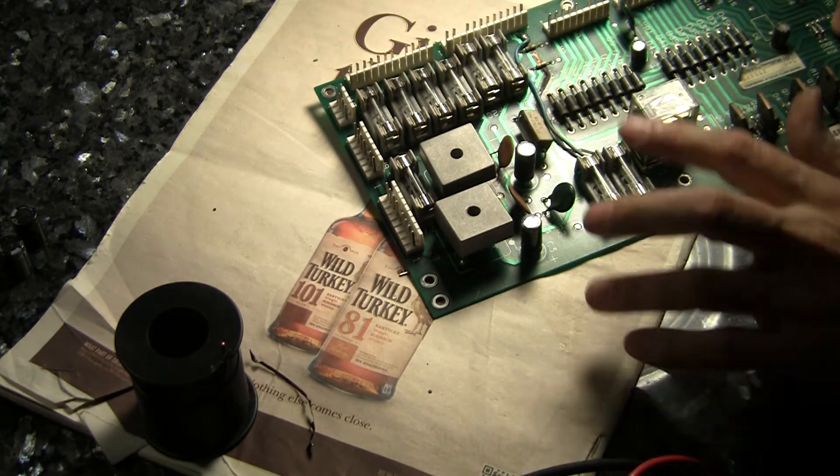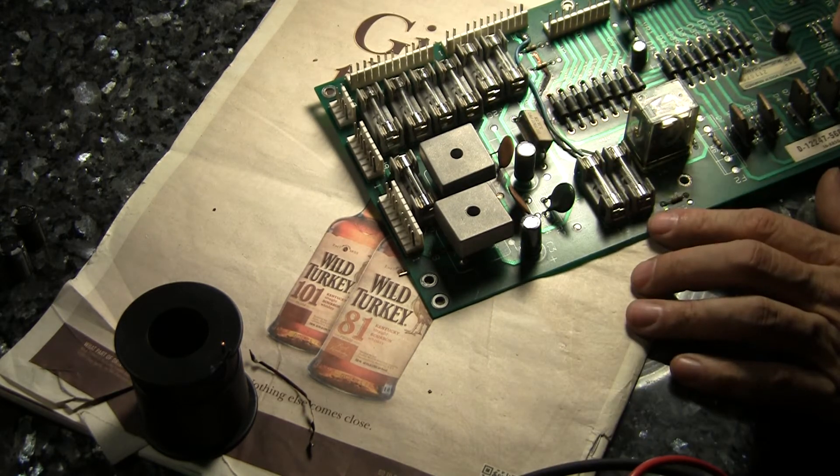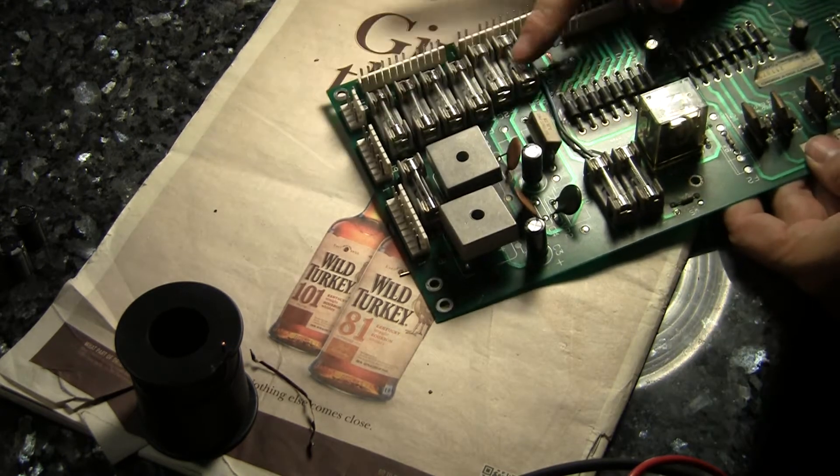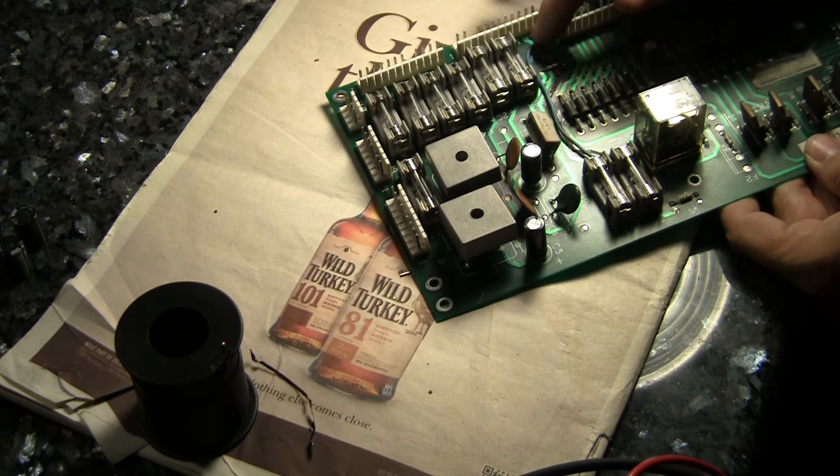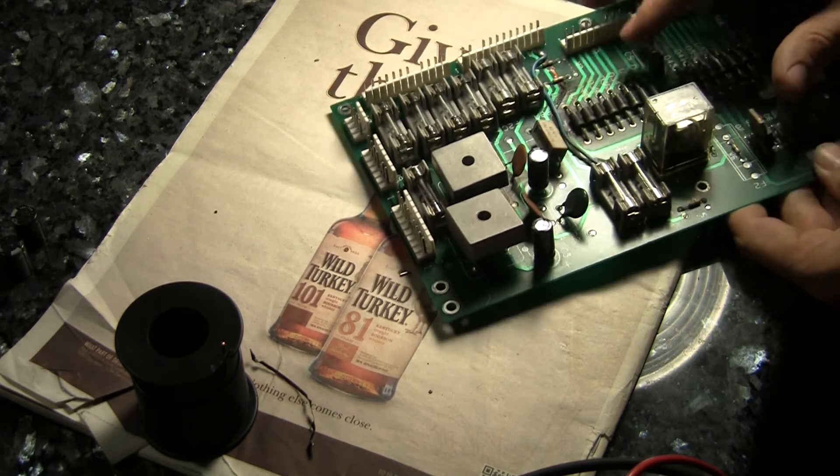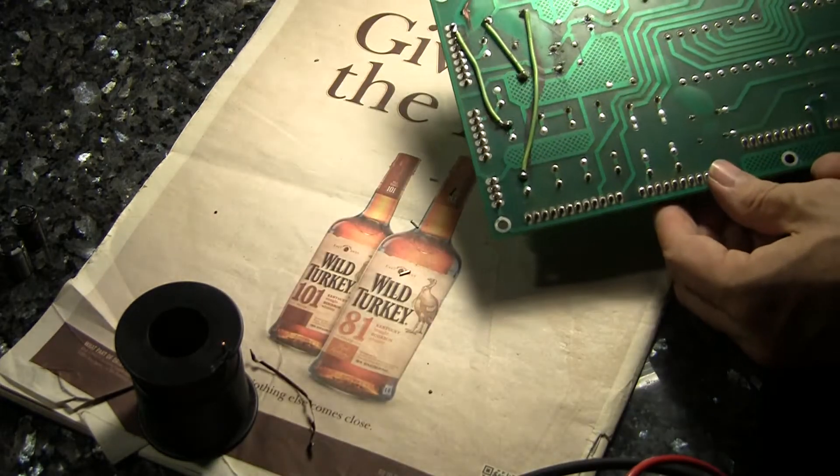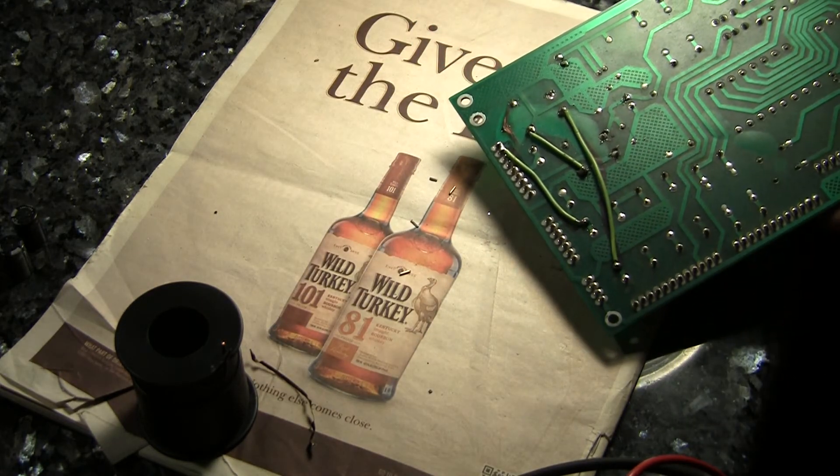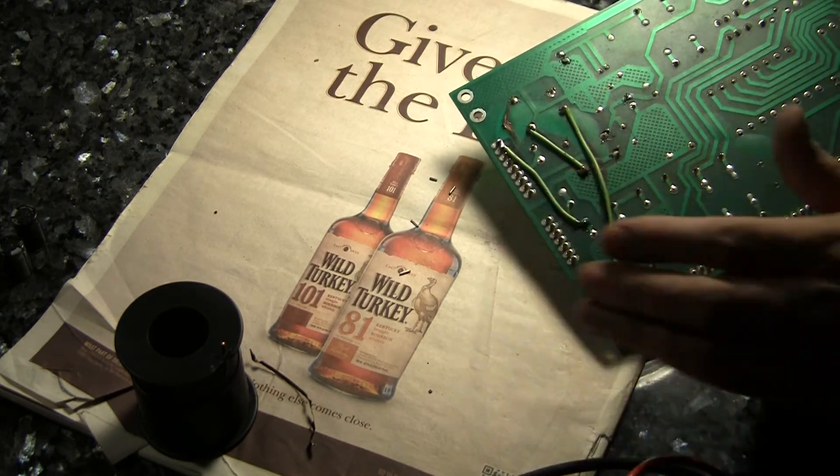And we have repaired the high voltage section here. Two new bridge rectifiers, two new electrolytic capacitors, all new fuses. This trace I checked that had been run before, it seems to be okay. And we've duplicated the burnt traces on the underside of the board.